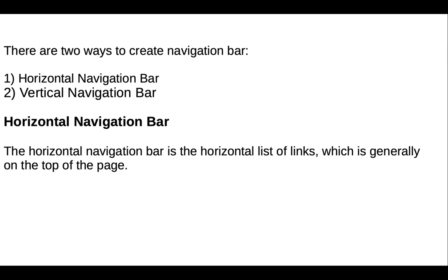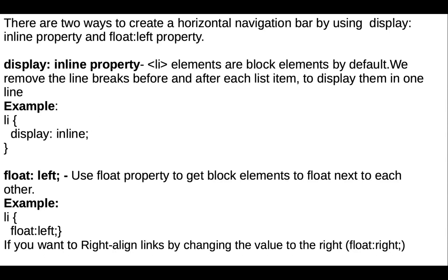There are two ways to create a navigation bar — horizontal and vertical. The horizontal navigation bar is a horizontal list of links generally at the top of the page. There are two ways to create a horizontal navigation bar: using the display inline property and the float left property.